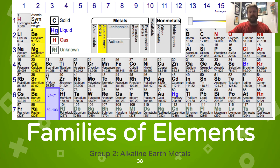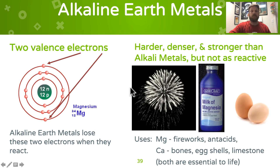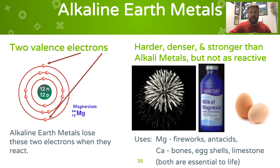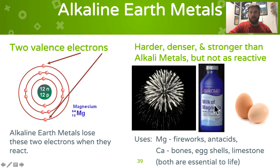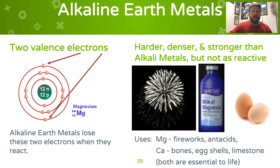Group 2 contains the family known as alkaline earth metals. Alkaline earth metals have two valence electrons in their outermost energy level. They will lose these electrons very easily, so they're fairly reactive. They're harder, denser, and stronger than alkali metals, but not quite as reactive. You can see magnesium in white fireworks — there is magnesium metal in those fireworks. It's also a component of antacids. Calcium is needed for strong bones and by chickens to make strong eggshells. Both magnesium and calcium are essential to life.